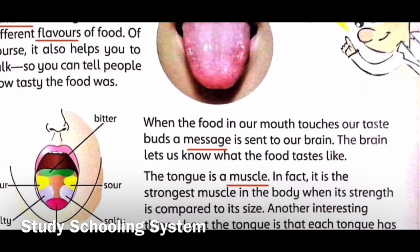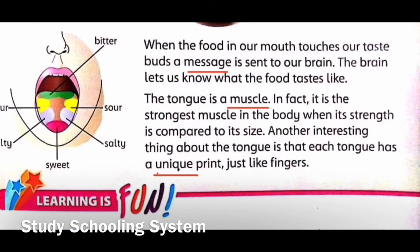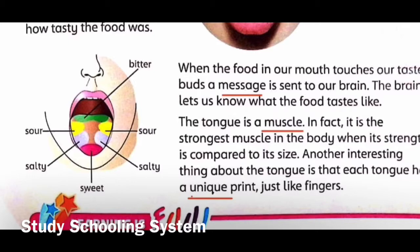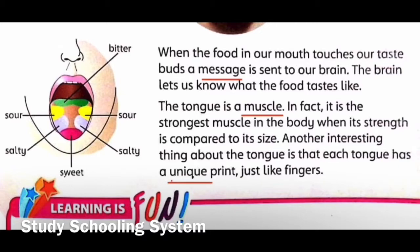The tongue is a muscle. In fact, it is the strongest muscle in the body when its strength is compared to its size. We will learn the definition of a muscle later. It's such a small organ inside our mouth, yet it's very strong. That's what they mean by strength compared to its size.